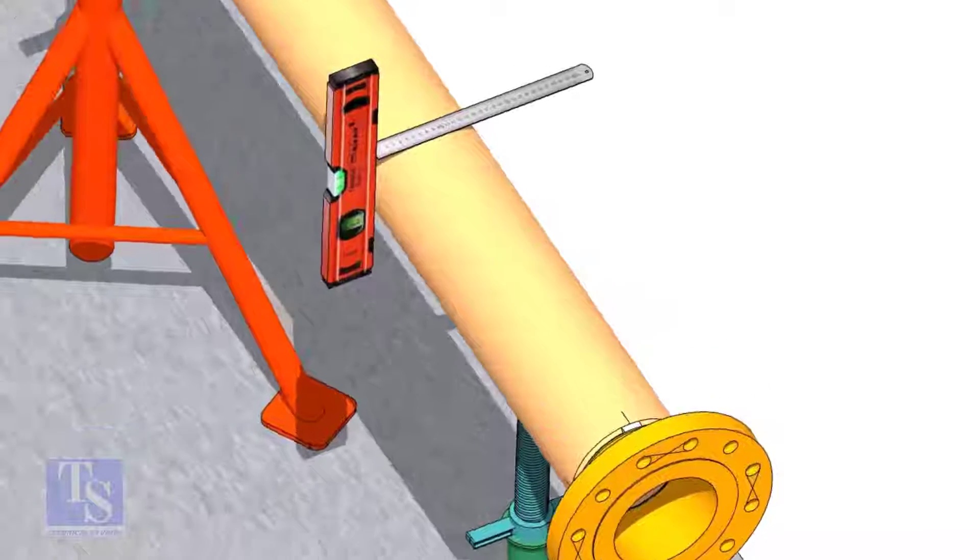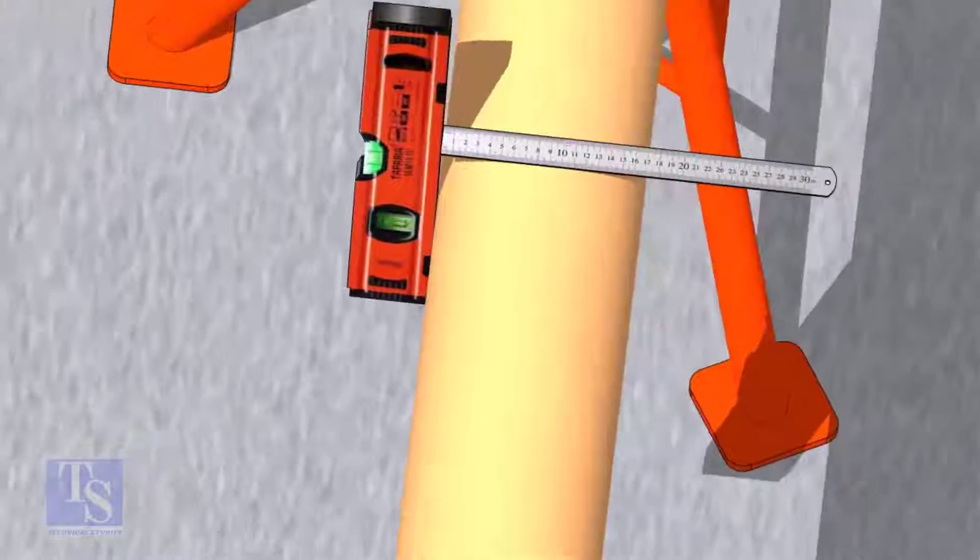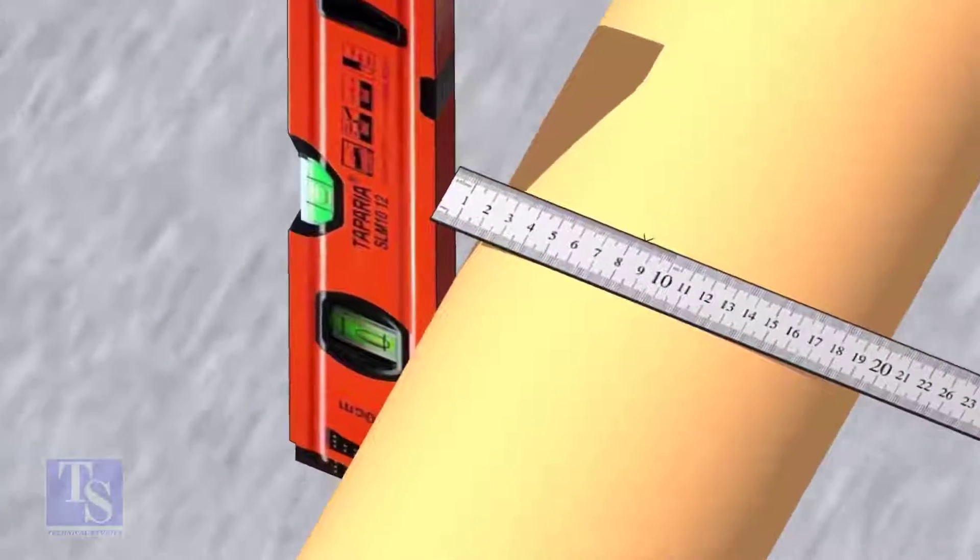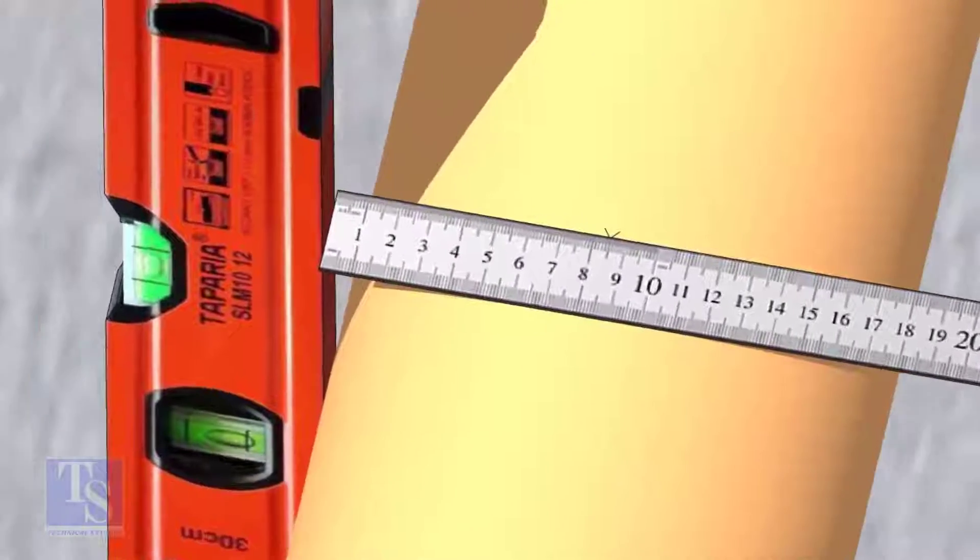Mark the center of the pipe. OD of a 6 inch pipe is 168mm, so mark the half OD 84mm as shown.